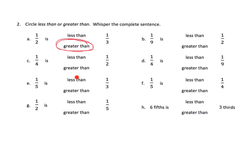For example, let's look at problem E: one fifth compared to one third. Is one fifth less than one third, or is one fifth greater than one third? One fifth is less than one third. Some students might figure that out by looking at the tape diagrams they shaded, while others are ready to reason about fraction size based on the denominators. Teachers, it's up to you to let students differentiate themselves as they move forward.